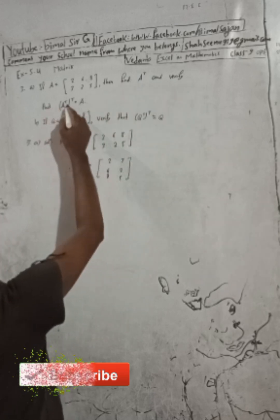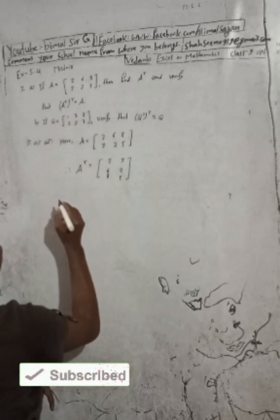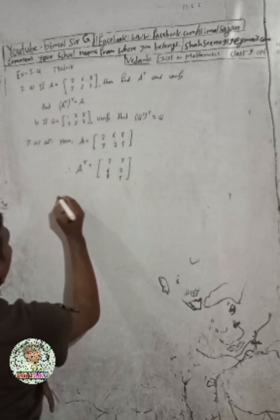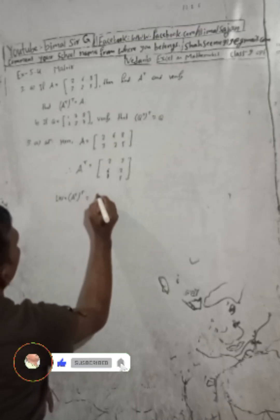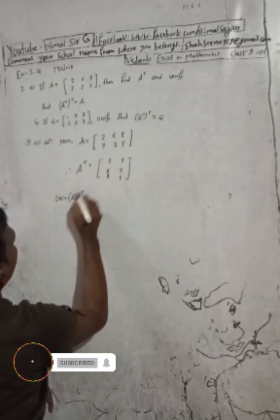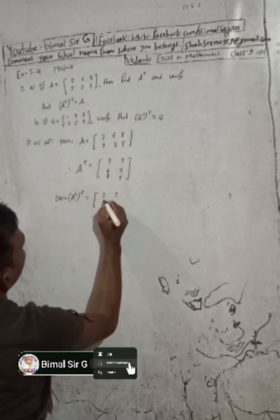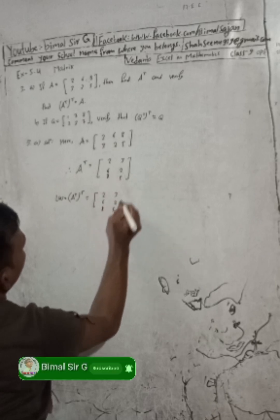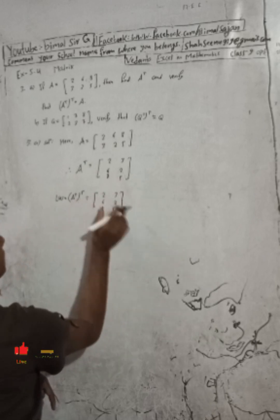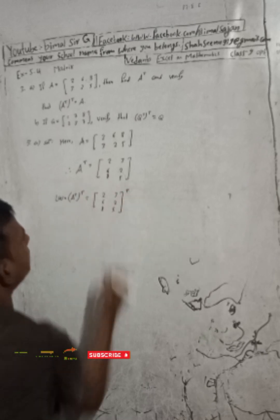Now we have to verify that the transpose of A transpose equals A. So LHS is equal to A transpose and then its transpose. A transpose is: two three, six two, eight five. Now we take the transpose of this.